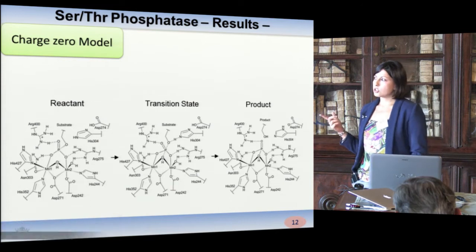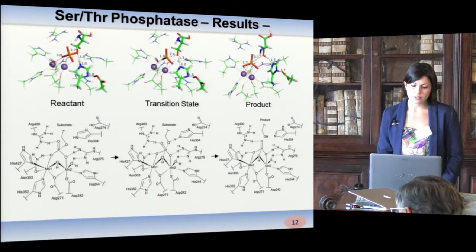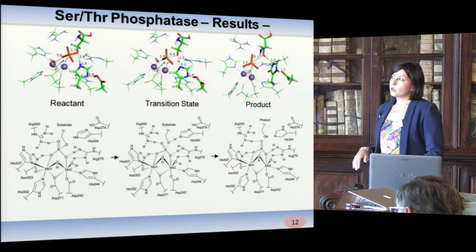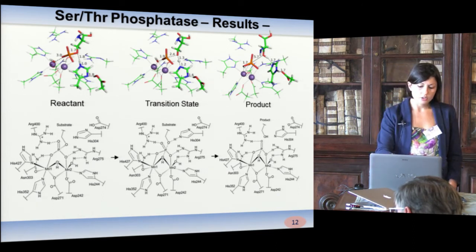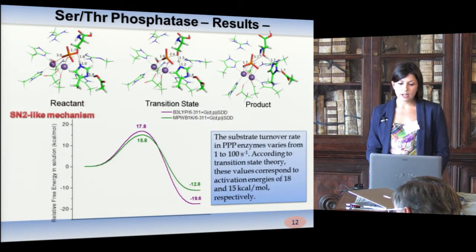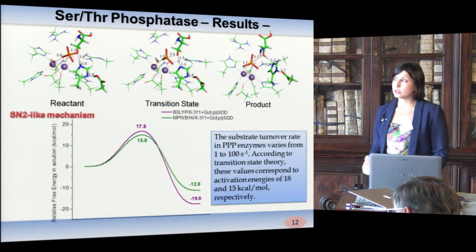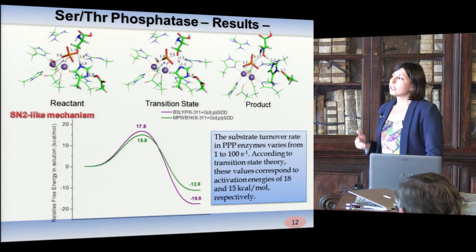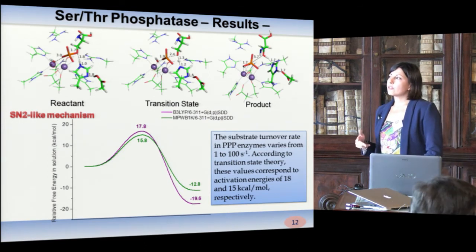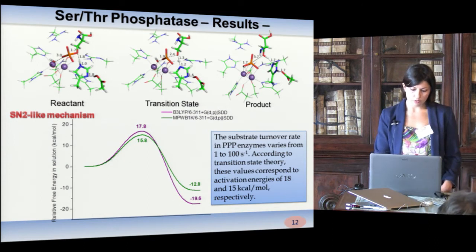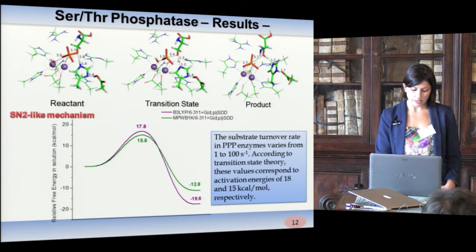Starting with the charge zero model — arising from considering two hydroxides — we found just one transition state in which we observe the nucleophilic attack and the departure of the leaving group protonated by histidine 304 to give the product. The energetic profile obtained with the two functionals both give results in agreement with experimental indications of the turnover rate of the enzyme.